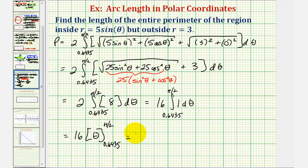So when theta is pi over two, of course we just have pi over two. And then when theta is approximately 0.6435, we just have 0.6435.